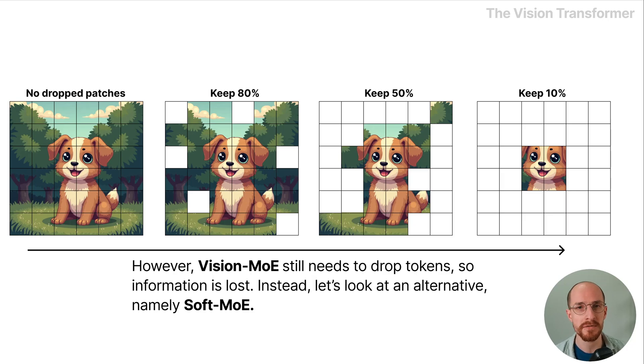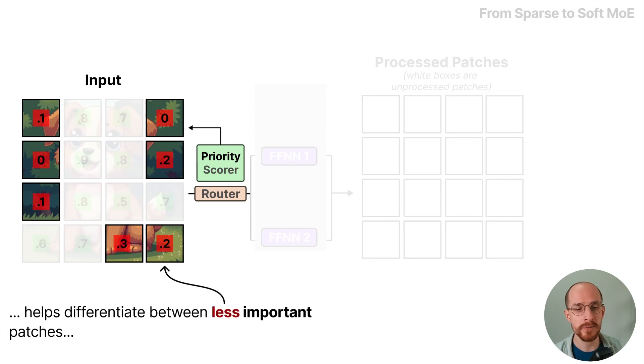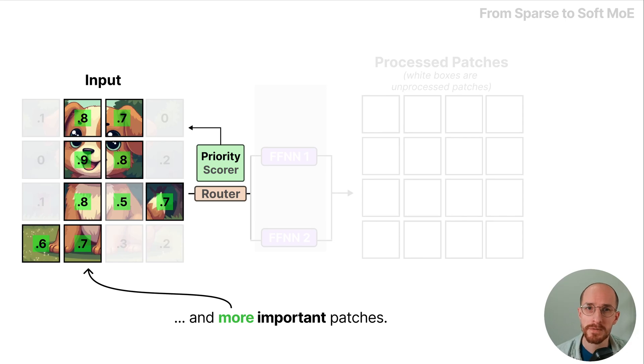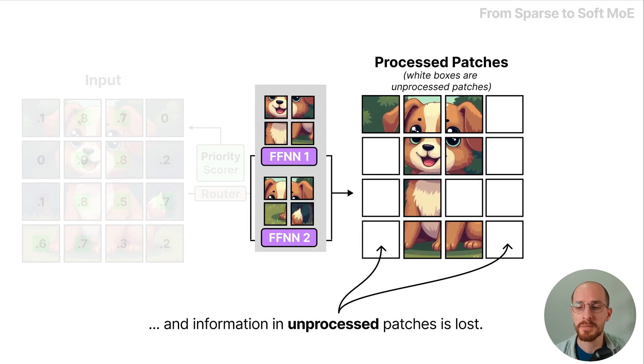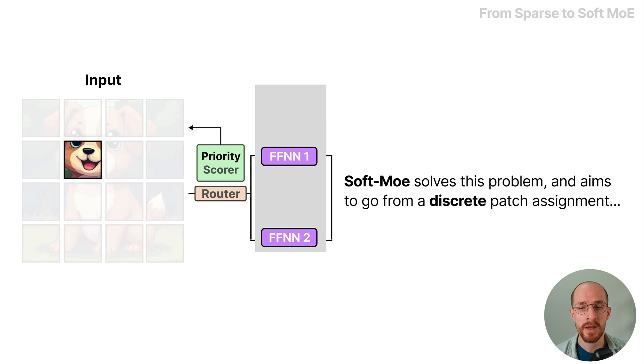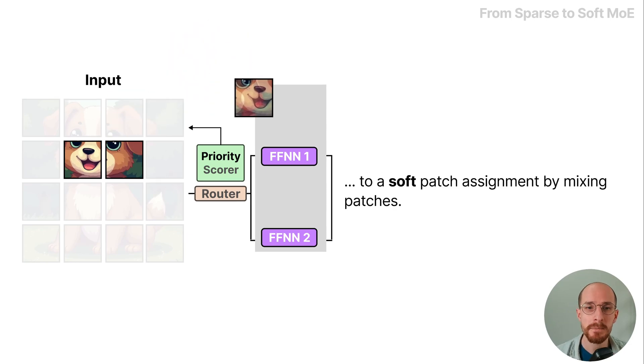Instead let's look at an alternative, namely Soft MoE. In vision MoE the priority score helps differentiate between less important patches and more important patches. However a subset of patches are assigned to each expert and information in unprocessed patches is lost. Soft MoE solves this problem and aims to go from a discrete patch assignment to a soft patch assignment by mixing patches.